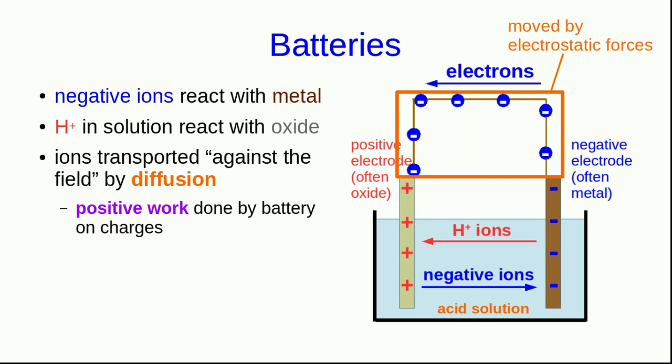Notice that the electrons moving through the wires are being moved by electrostatic forces, whereas the ions in the solution are being moved by non-electrostatic forces. So as always, there are non-electrostatic forces doing work to bring about charge separation. But we've now given the charge a way of unseparating by flowing through the wire. And so we have set up a continuous loop or circuit of charge flow.